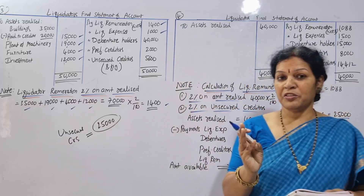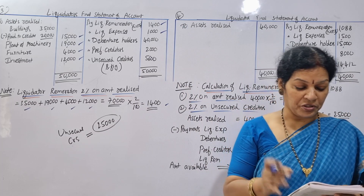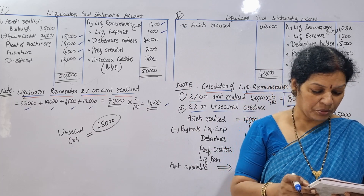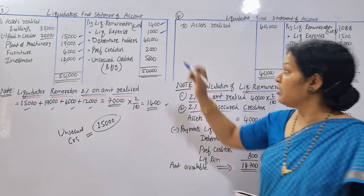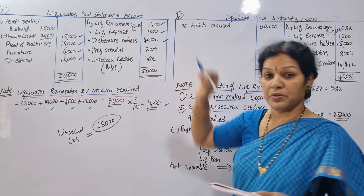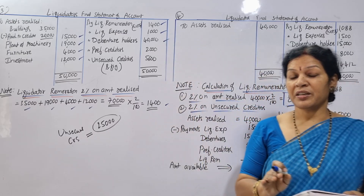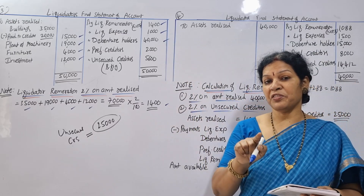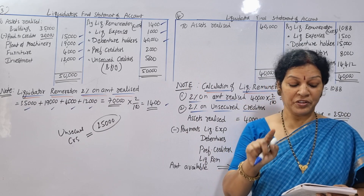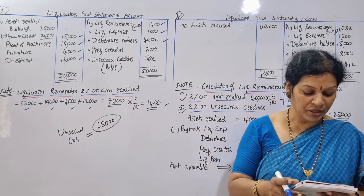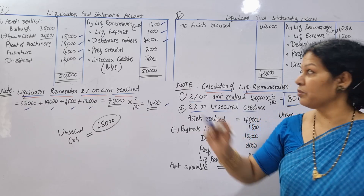Liquidator remuneration and liquidation expenses are noted. Next: debentures — $40,000. After debentures, creditors: preferential creditors and unsecured creditors. Preferential creditors: $20,000.